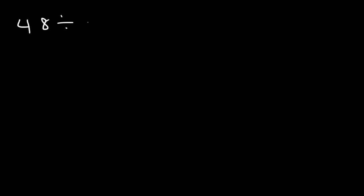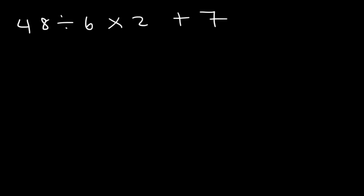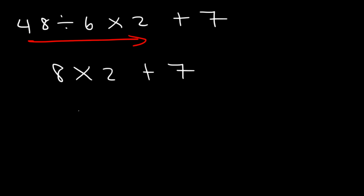Try this: 48 divided by 6 times 6 times 2 plus 7. Multiplication and division have more priority than addition, so save the plus 7 for last. Working left to right: 48 divided by 6 is 8, then 8 times 2 is 16. Finally, 16 plus 7 is 23.